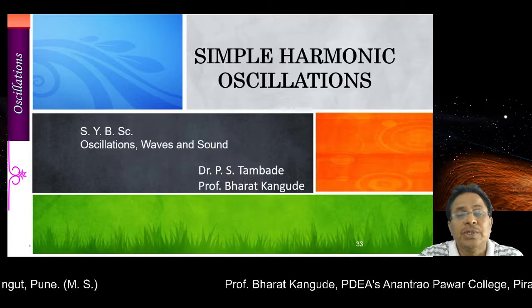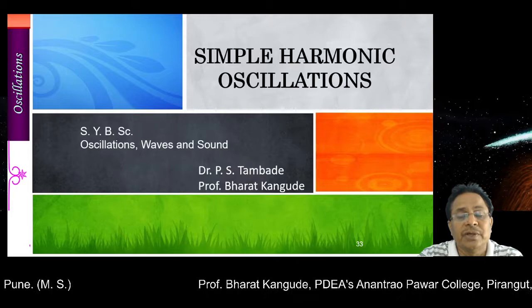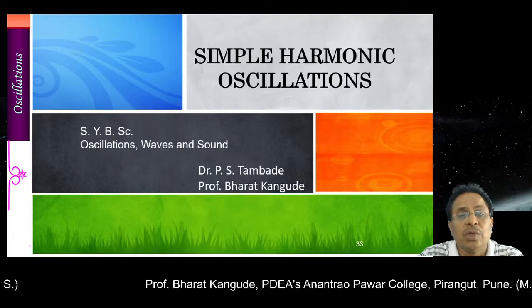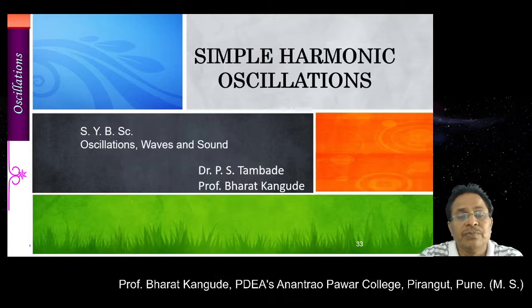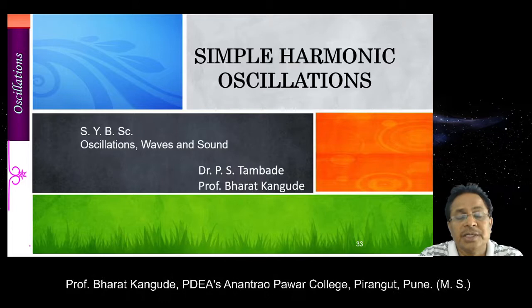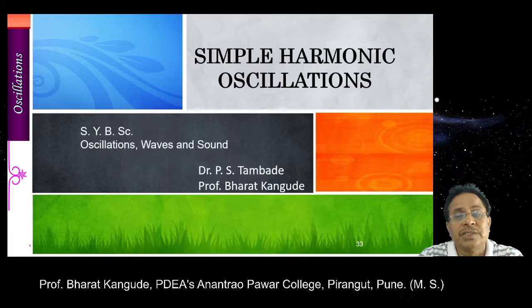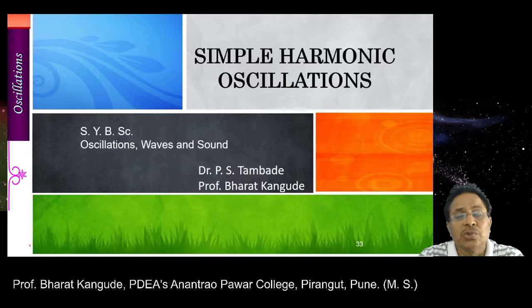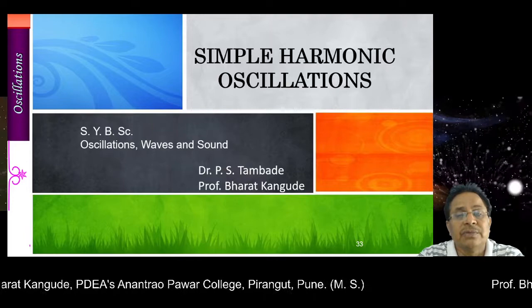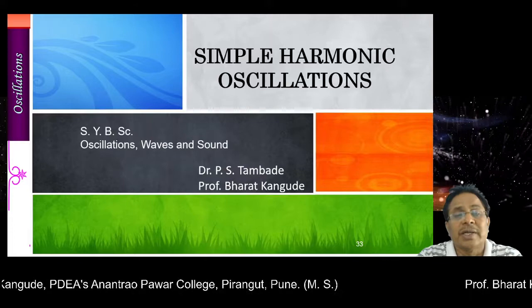Now let us go to the application part of the theory we have learnt in undamped free oscillations. The theory comes in a very simple way: when two different types of SHMs are acting on the same particle. Earlier we took only one SHM acting on one particle. Now when two different SHMs make a certain angle or are perpendicular, the resultant path is a very interesting phenomenon in physics. This is called the composition of two SHMs, either parallel or perpendicular.